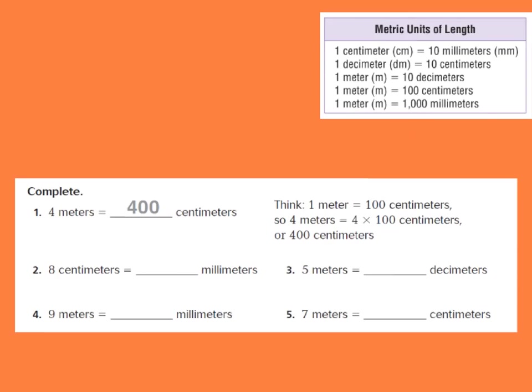Let's look at number one on page 231. They are saying four meters equals how many centimeters. I need to look at my chart — one meter equals 100 centimeters. I have four meters, so I'm going to draw my four meters: one, two, three, and four meters. Each one equals 100 centimeters, so I have 100, 200, 300, and 400.